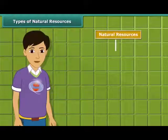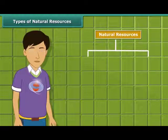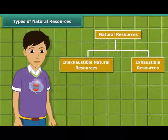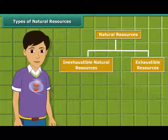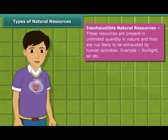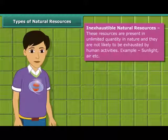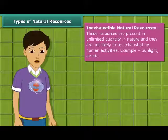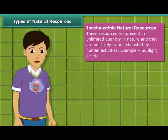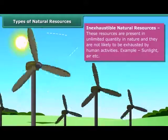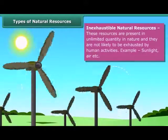Natural resources can be broadly classified into two categories: inexhaustible natural resources and exhaustible resources. Inexhaustible natural resources are present in abundance; hence it is unlikely that they will be exhausted by any human activity. Sunlight and air are examples of such resources.